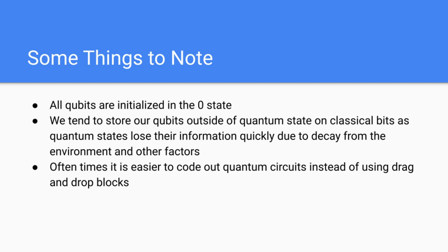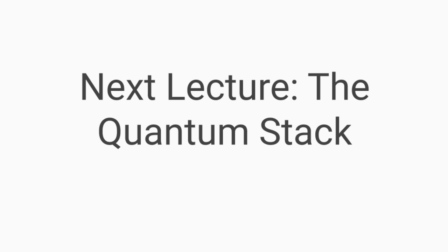So here are some final things to note before we end the lecture. All qubits are initialized in state 0, so if there is no quantum gate applied, they will still be in state 0. Secondly, we tend to store our qubits outside of quantum states on classical bits, as quantum states lose their information very quickly due to decay from the environment and other factors. Finally, a lot of you may start out creating quantum circuits using drag and drop blocks. However, for a lot of quantum algorithms, it's often easier to use code to create these quantum circuits, as there will often be repetition of a certain process and you could use a for loop instead when coding. This is the end of the 7th lecture. In the next lecture, we'll be talking about the quantum stack, including quantum hardware and quantum software. We'll see you then and have a nice day.